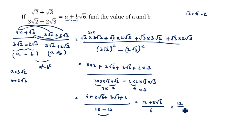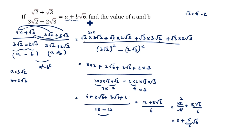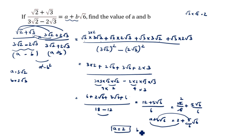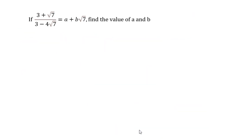We split the fraction: 12 by 6 plus 5 root 6 by 6, which simplifies to 2 plus 5 by 6 root 6. Comparing with a plus b root 6, we get a is equal to 2 and b is equal to 5 by 6. This is the answer.